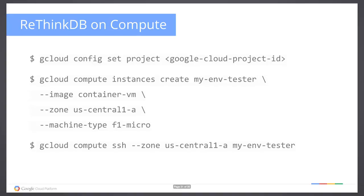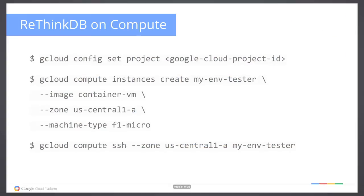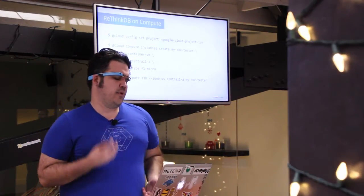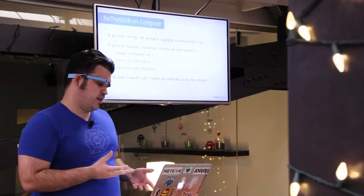Let's talk about RethinkDB on Compute. We know that RethinkDB can be deployed to pretty much any stack. How do you do that the Google Cloud Platform way? We can use a compute instance to do a very simple, very quick deploy. I haven't fully tested RethinkDB on managed VMs, but I have tested it on Compute and it works pretty well.